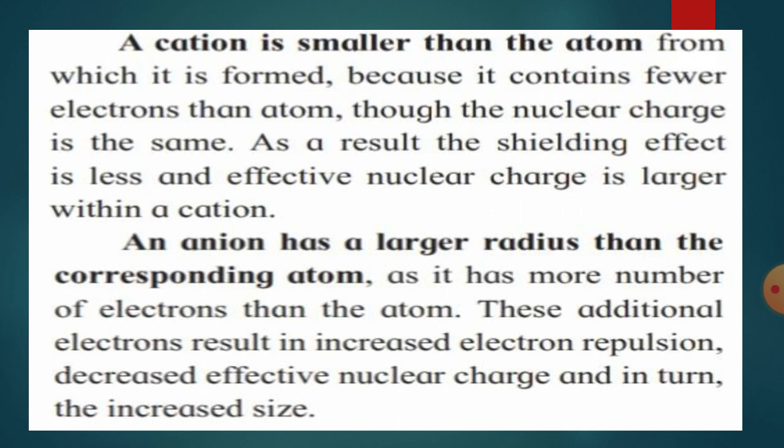An anion has a larger radius than the corresponding atom because it gains more electrons. Chlorine with atomic number 17 has 17 electrons; when converted to Cl⁻ it gains one electron, giving 18 electrons. These additional electrons result in increased electron repulsion and decreased effective nuclear charge, which in turn increases the size of the anion.